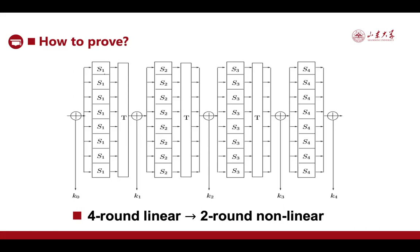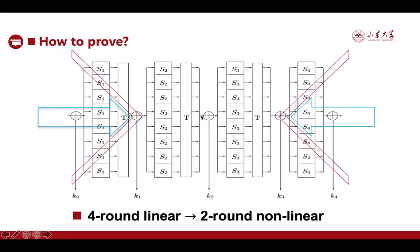Our proof employs the H-coefficient technique. We use the cryptographic properties of the first and the fourth S-boxes and show that the intermediate values are close to the two-round nonlinear SPN of Cogliati and Li. So we first formally argue this observation and then apply their result. This finishes the proof.